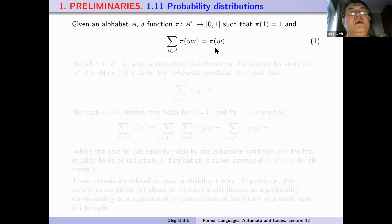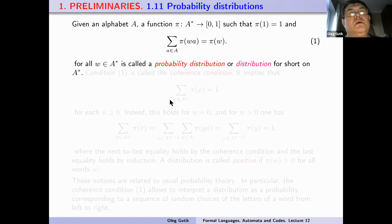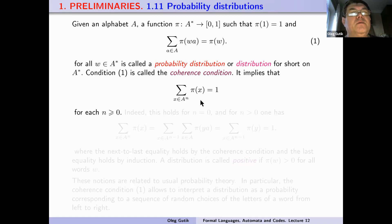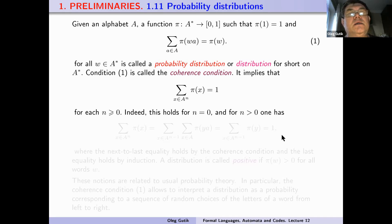And the following formula holds: the sum over all words wa from A-star of p(wa) is equal to p(w), for all words w from the free monoid A-star. This is called a probability distribution, or simply a distribution on the free monoid A-star. This condition is called the coherence condition. It implies that the sum over all words x of length n of p(x) is equal to one, for each n greater than or equal to zero.